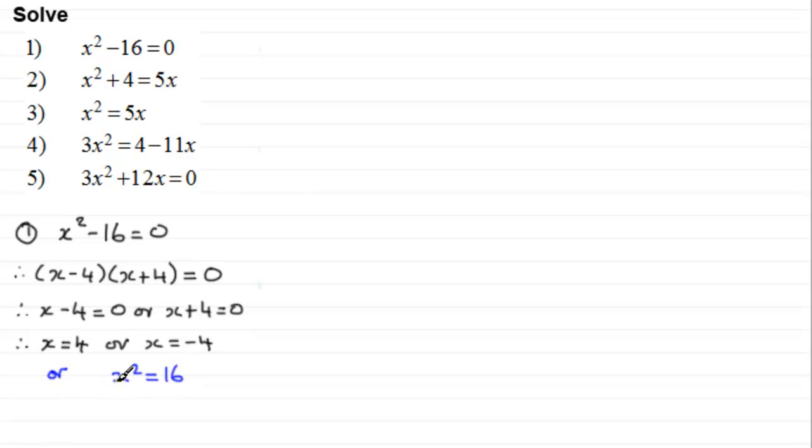And then we square root both sides, so therefore x would be equal to the square root of 16. But we've got to be careful here, it is plus or minus. And that means that therefore x equals plus 4 or it equals minus 4. So do be careful with that way of doing it. Remember the plus or minus.